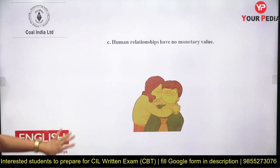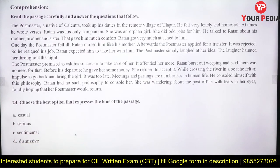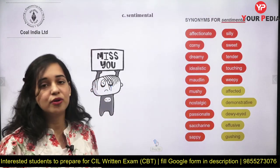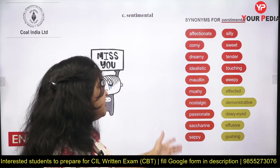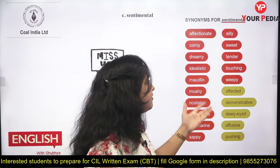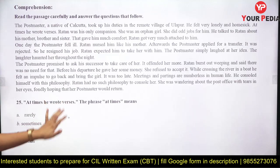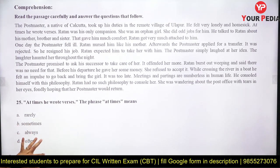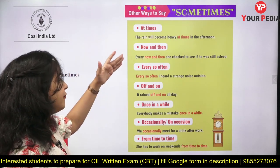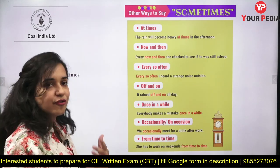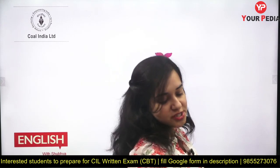RC question four: What is the tone of the passage? Options — casual, serious, sentimental, or dismissive. The passage is full of feelings and emotion, so the answer is sentimental. Synonyms of sentimental include: affectionate, nostalgic, mushy, touching, tender, sweet, and weepy. RC question five: 'At times he wrote verses' — 'at times' means sometimes. Other ways to say sometimes: now and then, every so often, off and on, once in a while, occasionally, and from time to time. This covers all 25 previous year questions from the COAL exam.